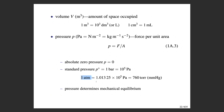Another unit commonly seen in gas law problems is the Torr, equivalently called millimeters of mercury. You may recall discussing barometers in general chemistry — that's where millimeters of mercury comes from. The conversion between atmospheres and Torr involves the factor 760.